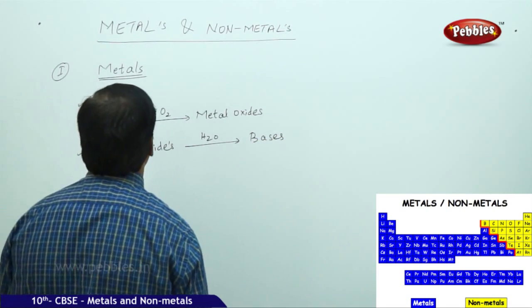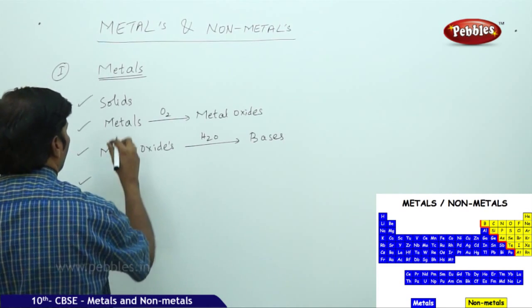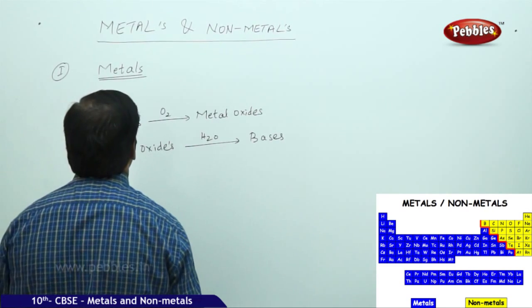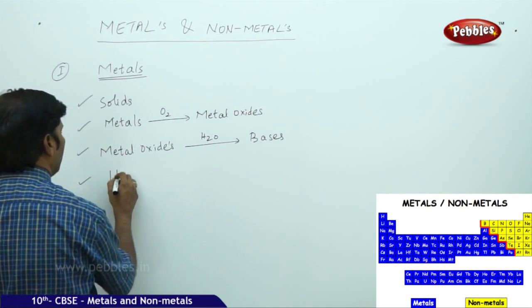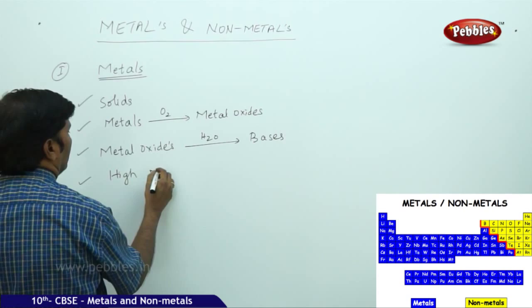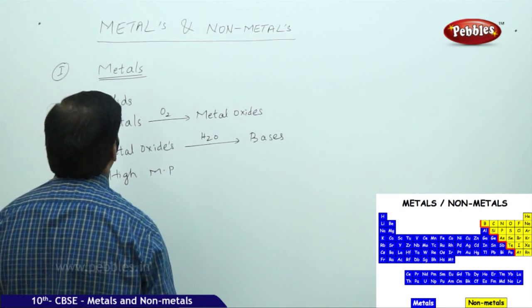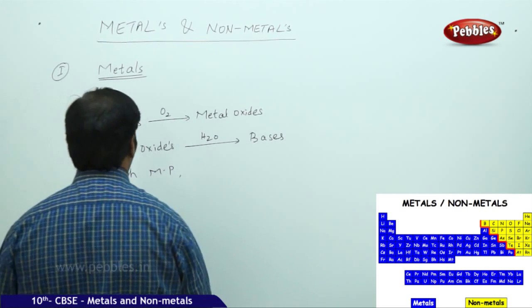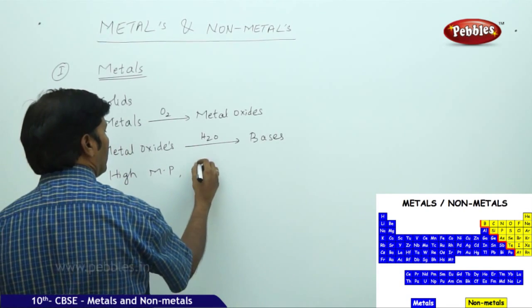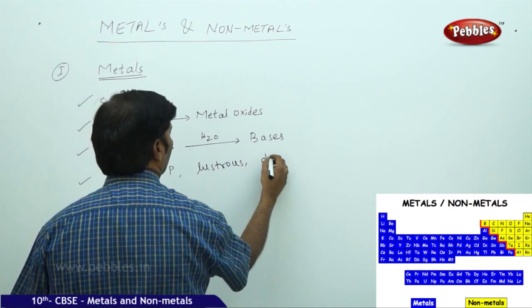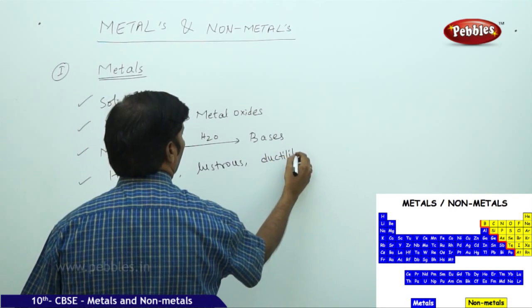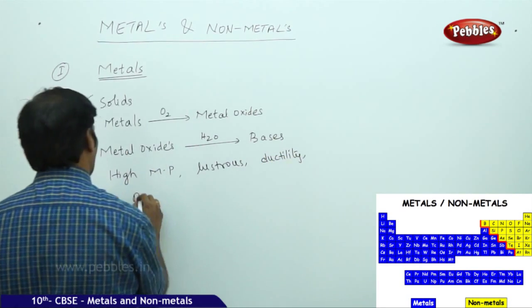All metals, depending upon their nature, have high melting point. They show lustrous nature, ductility, and malleability.